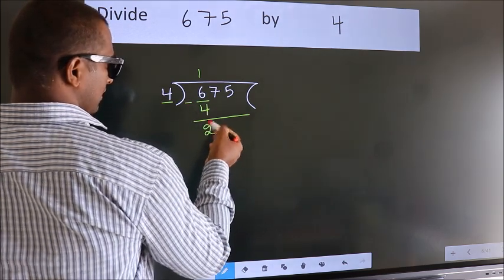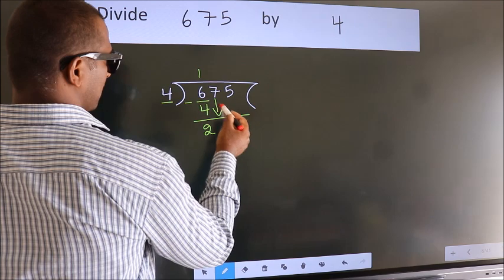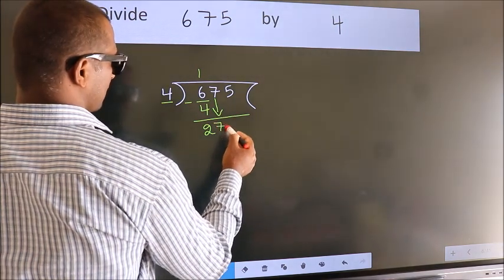After this, bring down the next number. So, 7 down, which gives us 27.